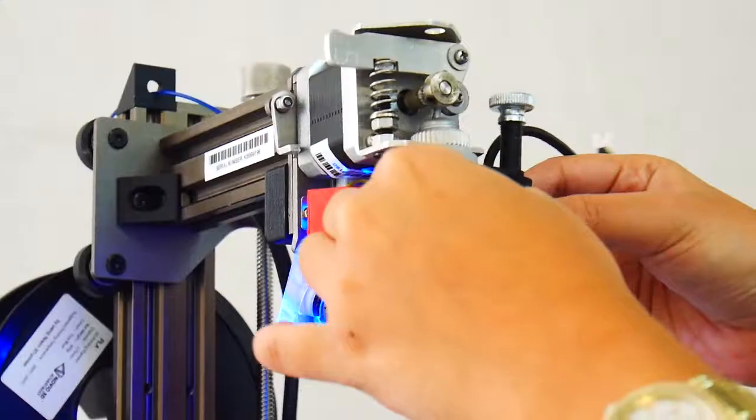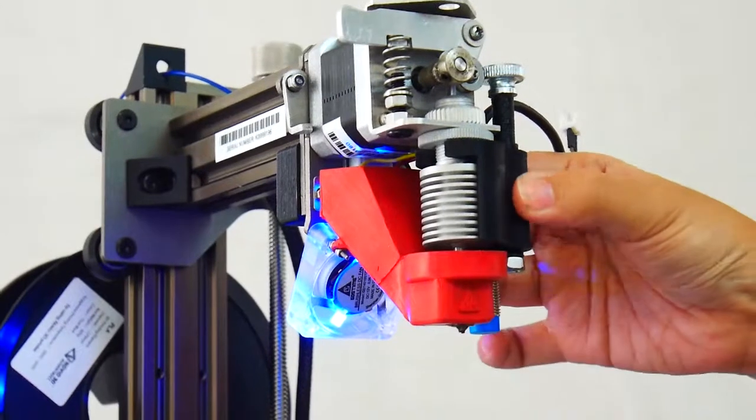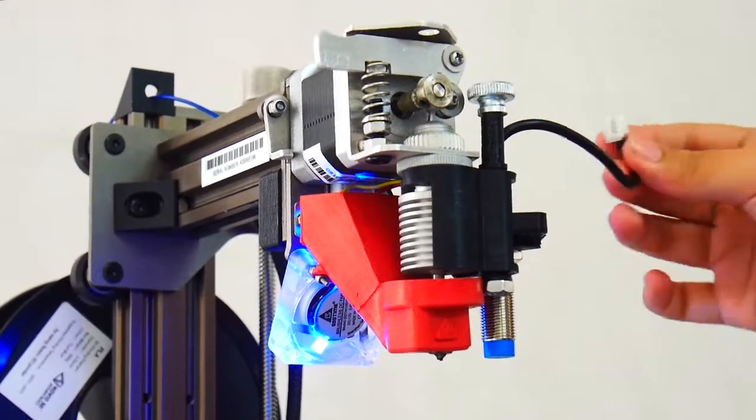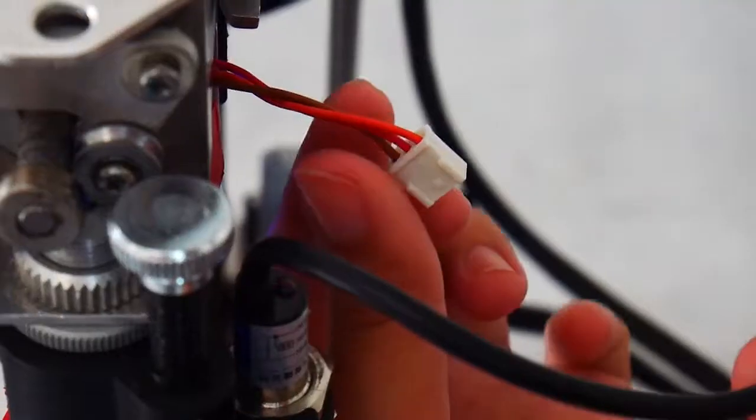Attach the auto-level module at the extruder sideways as shown. Place it as close as possible to the nozzle tip. Then attach the connector pin.